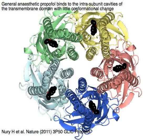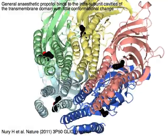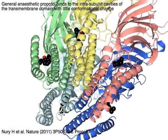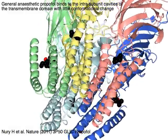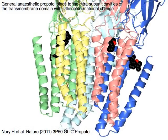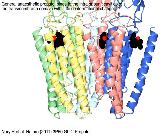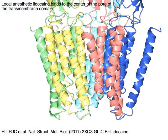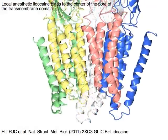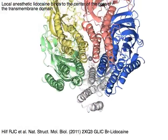General anesthetic propofol binds to the intra-subunit cavities of the transmembrane domain with little conformational change. Local anesthetic lidocaine binds to the center of the pore of the transmembrane domain.